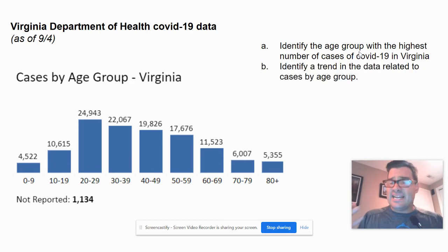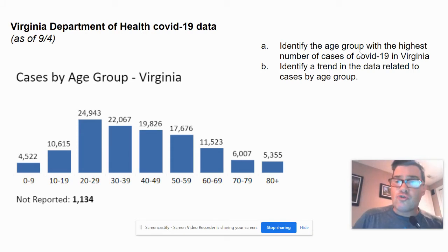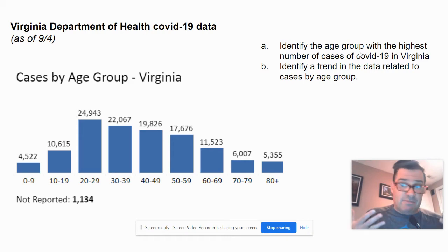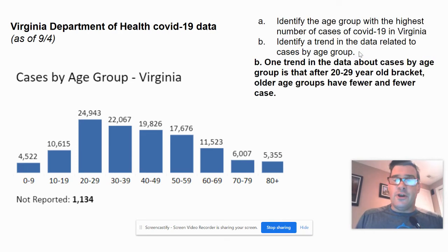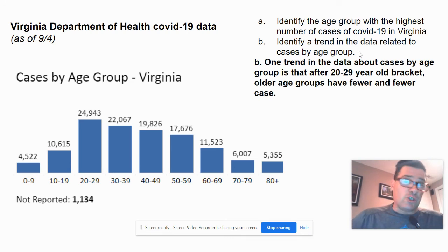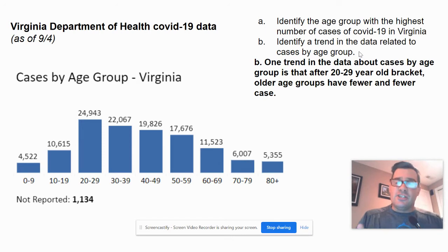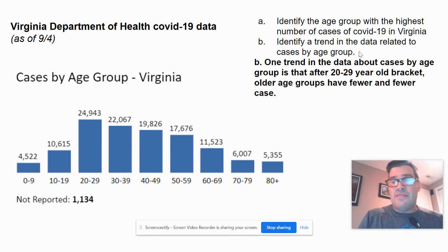The second question is also very common with quantitative data: identify a trend in the data related to cases by age group. This could have multiple answers. One trend in the data about cases by age group is that, starting from the 20 to 29 year bracket, older age groups have fewer and fewer cases. So we see younger people — those in their twenties — have the most, and then it drops off from there.